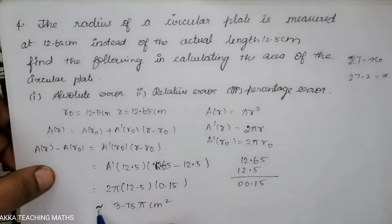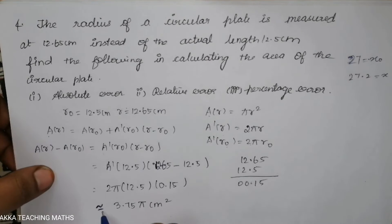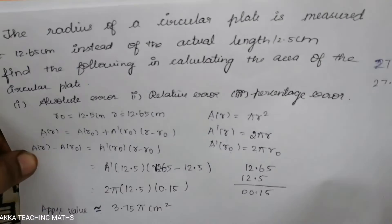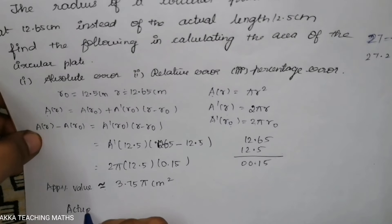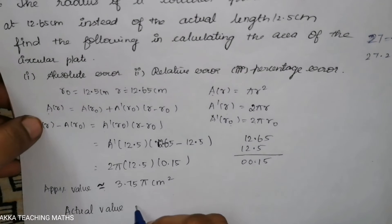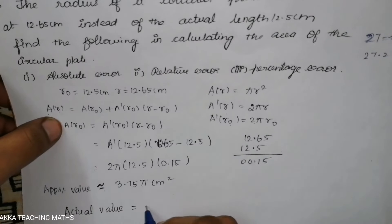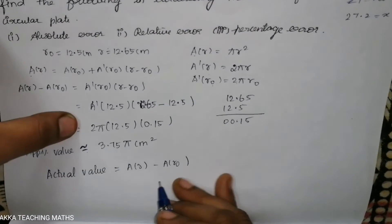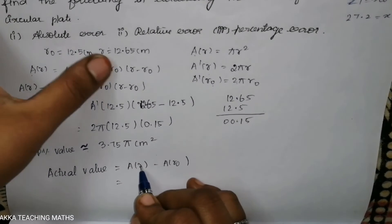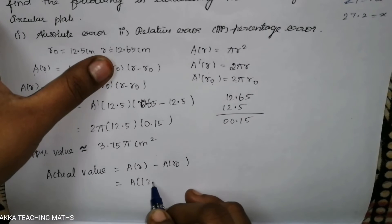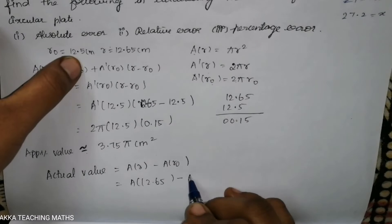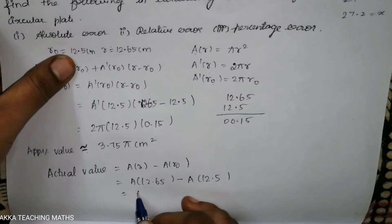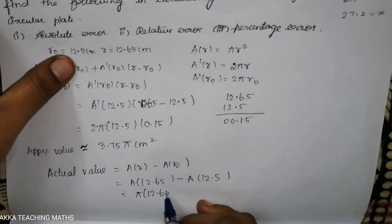Now we find the actual value. The actual value is A(r) − A(r0), which is A(12.65) − A(12.5). That is π × (12.65)² minus π × (12.5)², which is π × 160.0225 minus π × 156.25.